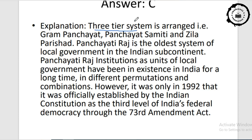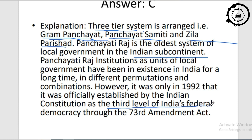The three-tier system consists of Gram Panchayat, Panchayat Samiti, and Zila Parishad. Panchayati Raj is the oldest system of local government in the Indian subcontinent. Although Panchayati Raj institutions have existed in India for a long time in different permutations and combinations, it was only in 1992 that it was officially established by the Indian Constitution as the third level of India's federal democracy through the 73rd Amendment Act.